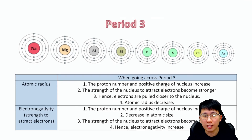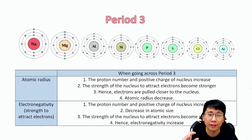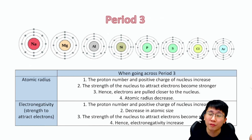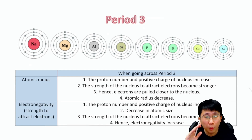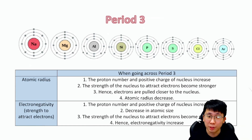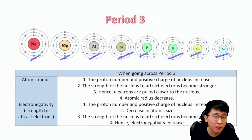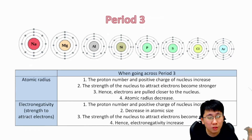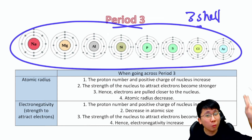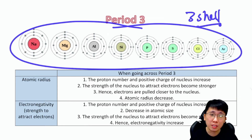For Period 3, a very common question involves atomic radius and electronegativity. Going across Period 3 from left to right — sodium, magnesium, aluminium, silicon, phosphorus, sulfur, chlorine, argon — the atomic size gets smaller. Every element in Period 3 has three shells. Unlike going down a group where you get more shells, everyone in Period 3 has the same number of shells.